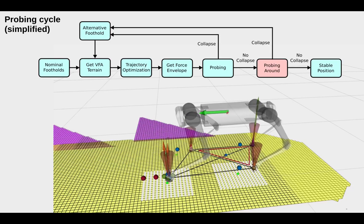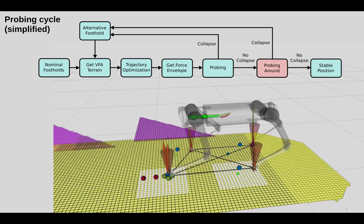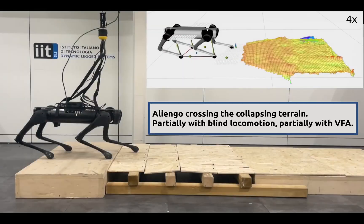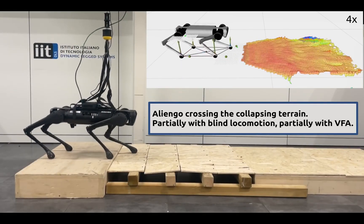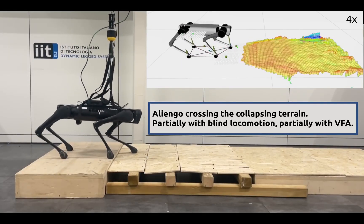Once the terrain is deemed safe, the robot advances to the next foothold. If a collapse is detected, an alternative foothold is selected starting again from the VFA.